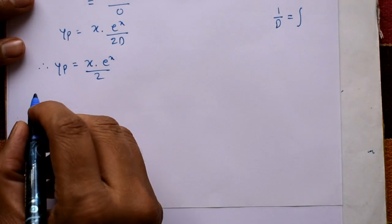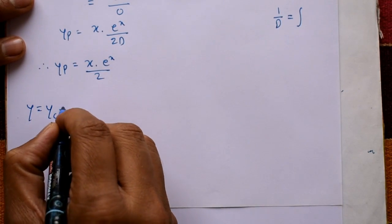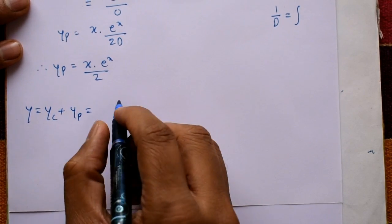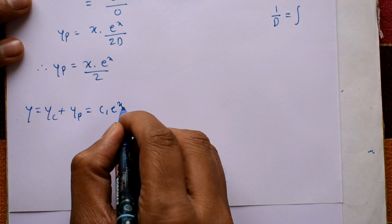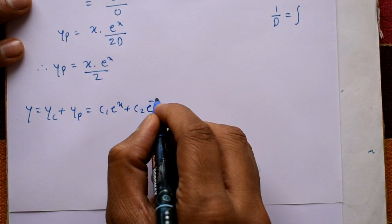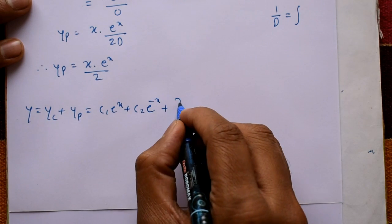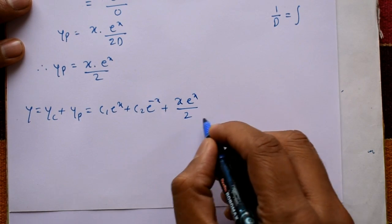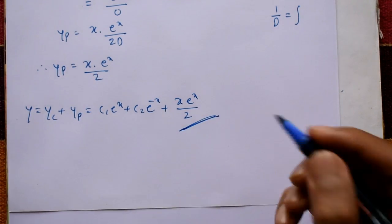The general solution is y equals complementary function plus particular integral: y = c₁eˣ + c₂e⁻ˣ + x·eˣ/2. This is the required general solution.